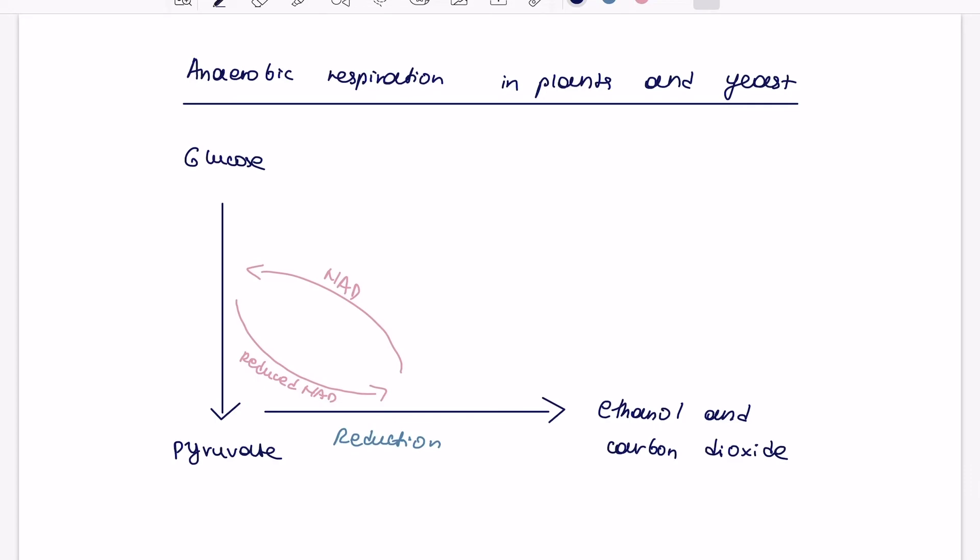So if you guys do OCR exam board for biology, what you do need to know is that pyruvate will go first into ethanal, releasing CO2, and then it will be converted into ethanol. And quite often, you can be asked, why is this reaction not reversible? In this case, it's because the CO2 released into the atmosphere, and you can't bring that back.